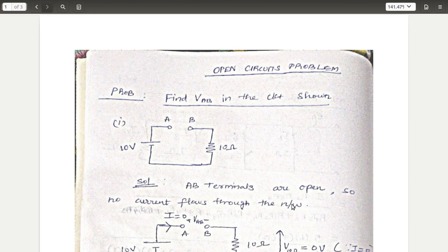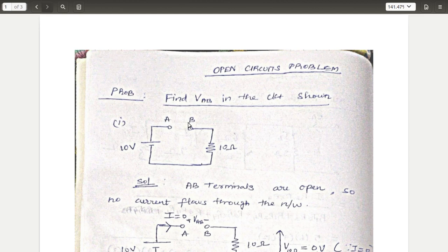First problem: find VAB in the circuit shown. They are asking you to find the voltage across terminals A and B. You have to determine whether this terminal is open or closed — here, the A and B terminal is open, so you should be very clear about that.